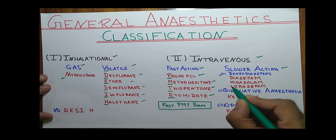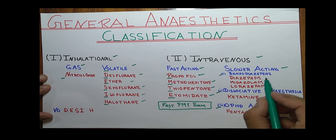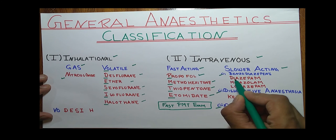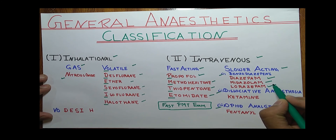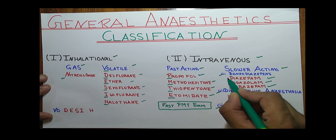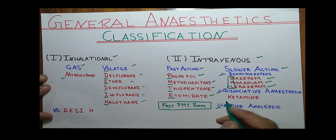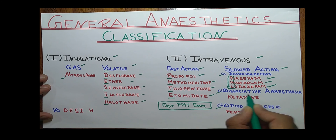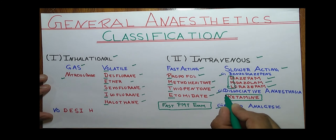In the slower-acting class, there are three categories: benzodiazepines, dissociative anesthesia, and opioid analgesics. In benzodiazepines, there are three drugs: diazepam, midazolam, and lorazepam — learn them with the mnemonic 'DML'. Next, in dissociative anesthesia, there is only one drug, that is ketamine.